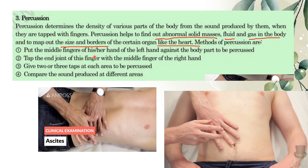For percussion technique: place the middle finger of your left hand firmly against the body part to be percussed. Then, using your dominant right hand, tap the middle finger joint with 2 or 3 taps at each area. Tap to identify the sound, then move to the other area, detect the same sound, and compare both sides.